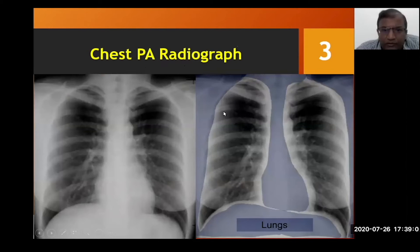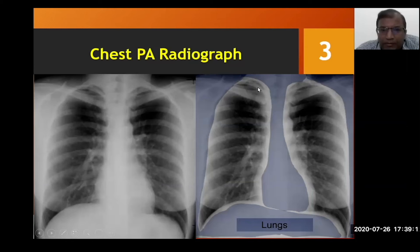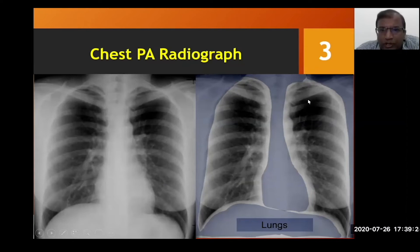First, look at the lung fields zone by zone. From the apex to the upper border of the second rib is the upper zone; from the upper border of the second rib to the upper border of the fourth rib is the mid zone; and the rest is the lower zone. We compare the upper zone with the upper zone on the other side, middle with middle, and lower with lower, which helps us identify which side is abnormal.